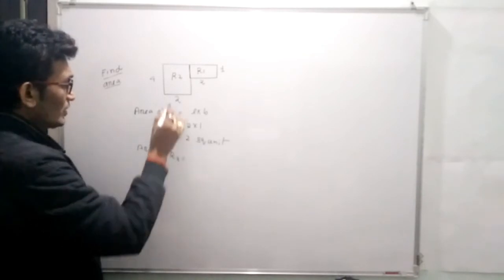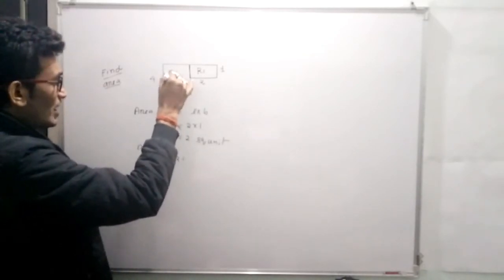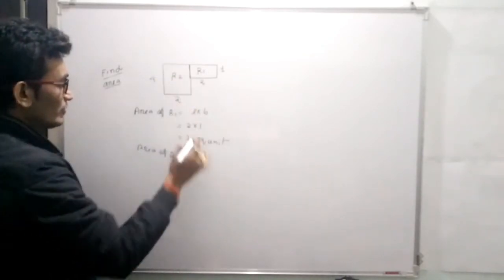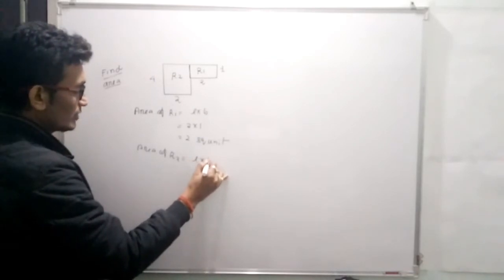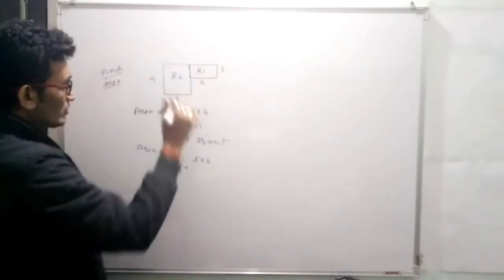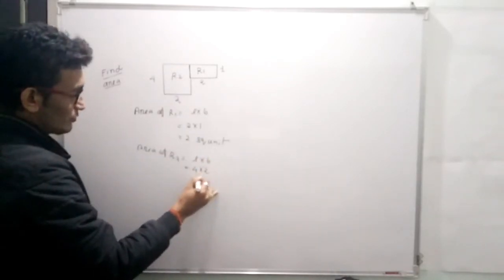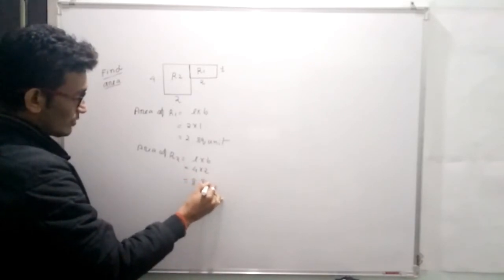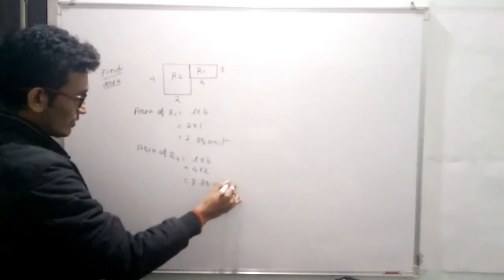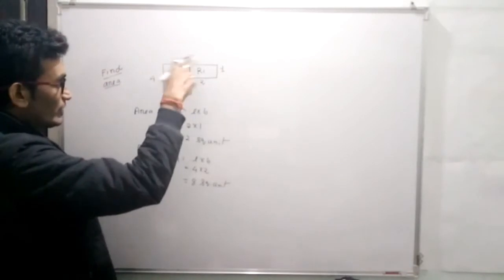This is rectangle R2. For R2, area should be length into breadth. Length is 4 and breadth is 2, which equals 8 square units.